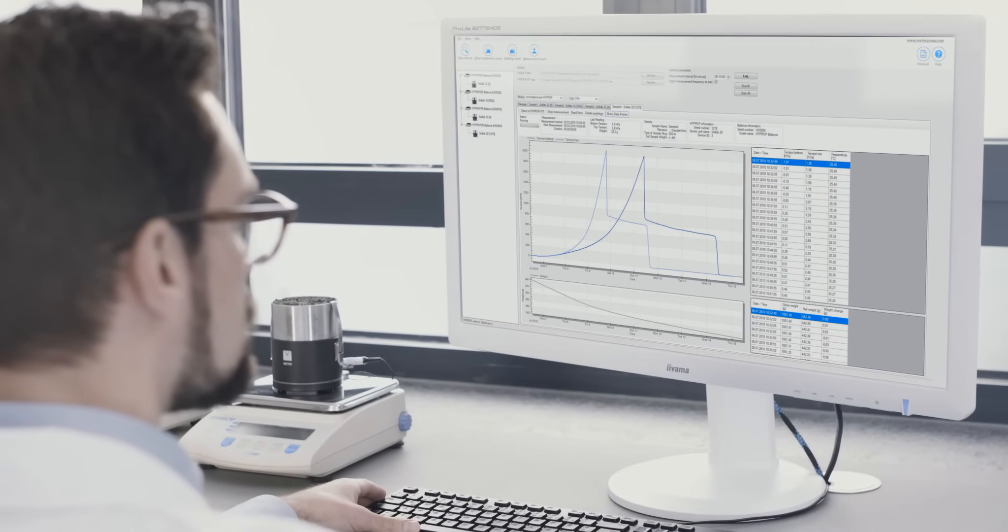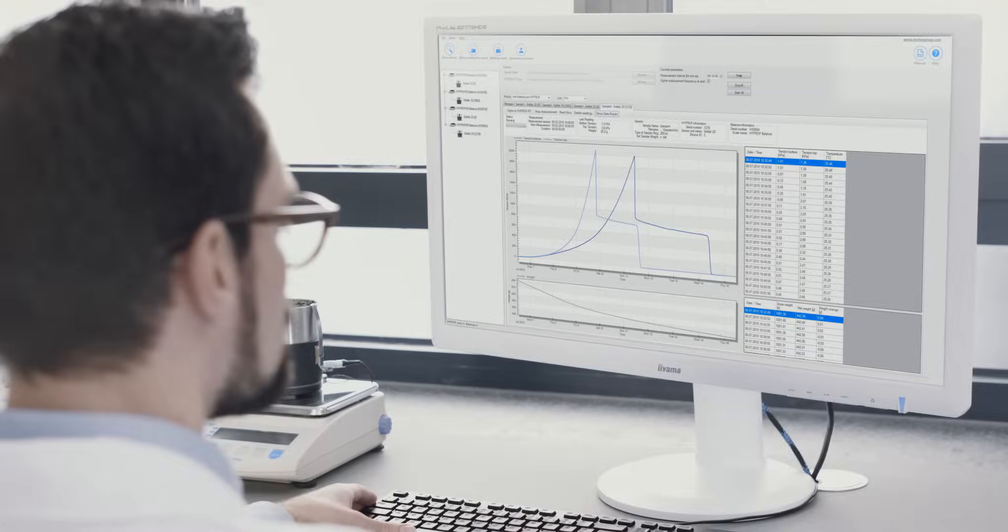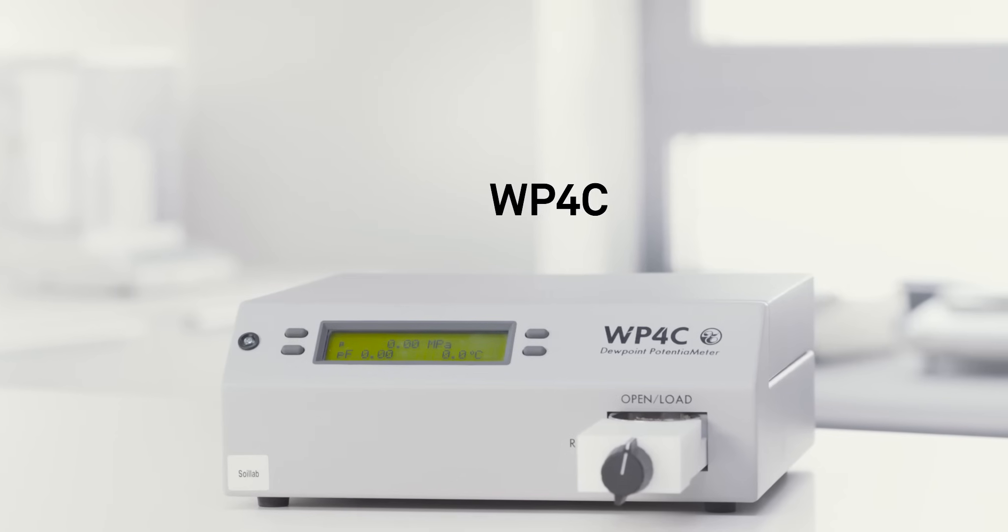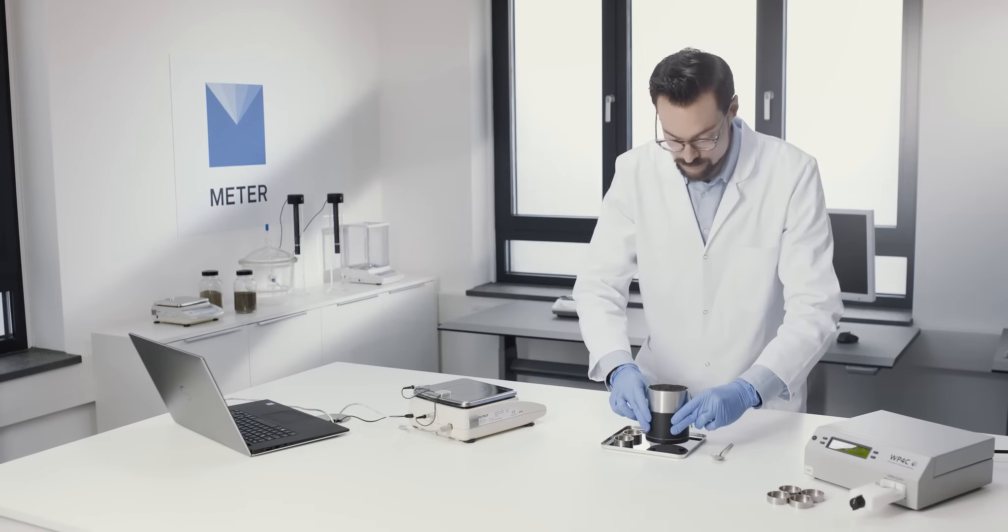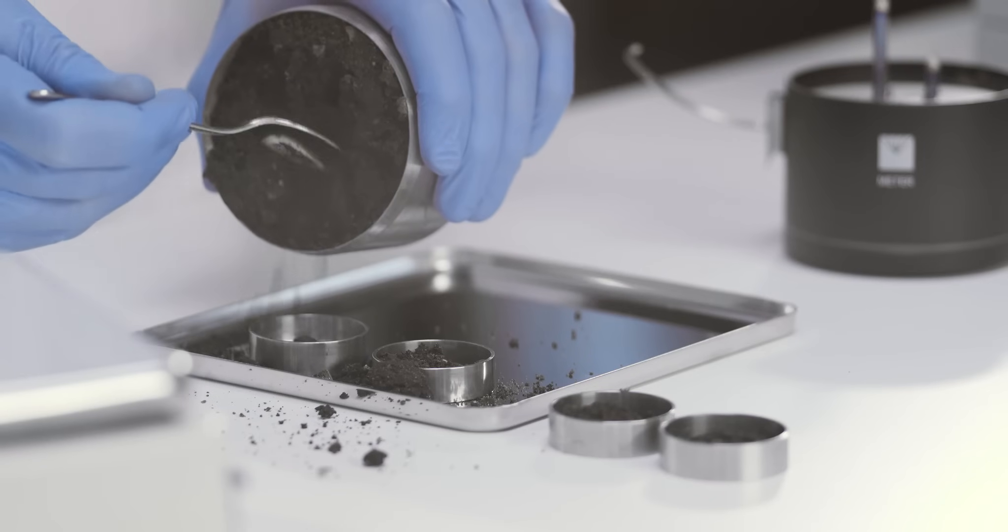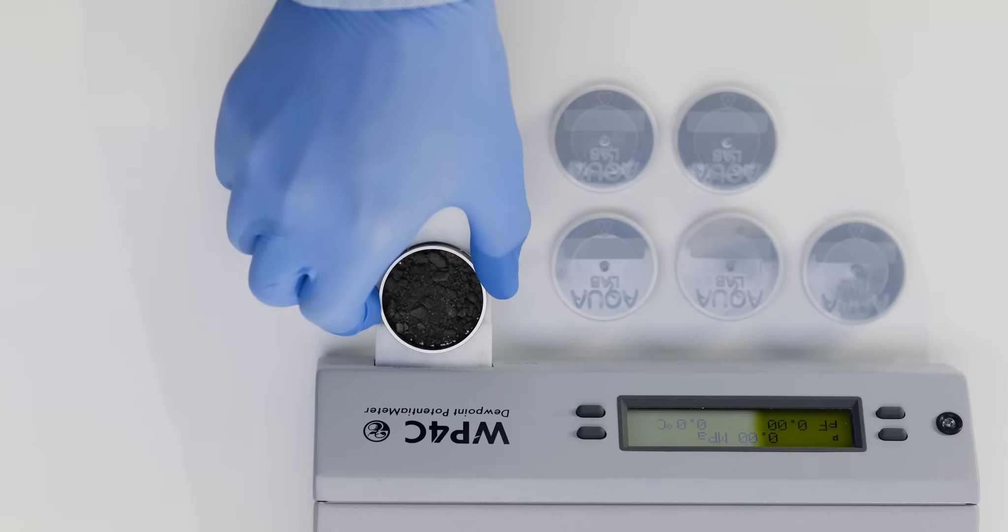The HYPROP automatically delivers the unsaturated hydraulic conductivity and wet end moisture release curve. Set up the WP4C, remove the sample from the HYPROP, and take two samples each from the top, middle, and bottom of the soil core.